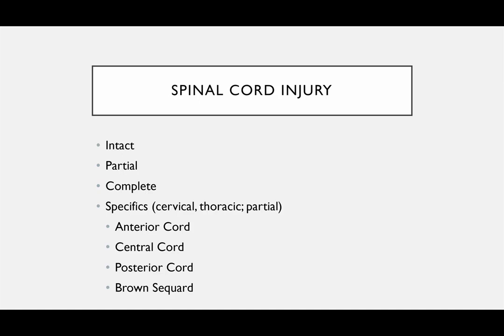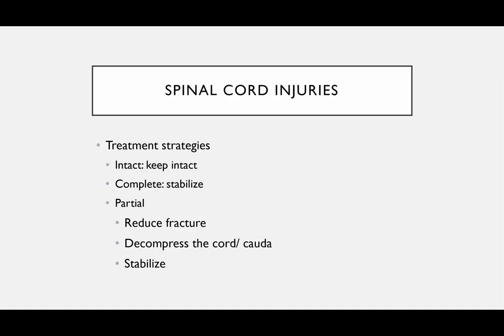Partial injuries include four types, which we'll go through. In terms of treatment strategies: if the patient is intact, try to keep them intact. If a patient has an unstable injury but no obvious cord injury, do everything you can to preserve that. If they have a complete spinal cord injury, the best you can do is stabilize them. If you have a partial spinal cord injury, you have an opportunity — you can reduce the fracture, decompress the cord or cauda equina, and stabilize them.